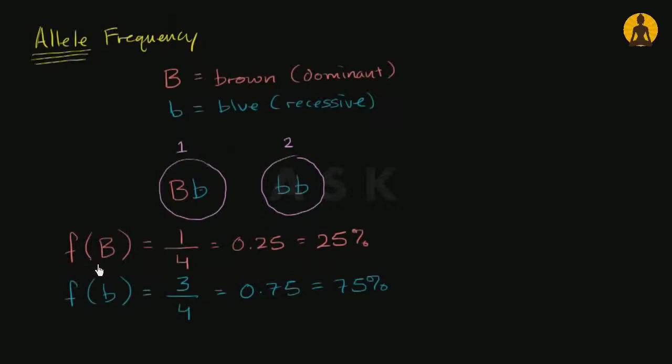And I really want to hit this point home, how this is different than, say, the phenotype frequency. If I asked you in the population, if I asked you the percent of brown eyed people, so now I'm talking about phenotype, what would that be?